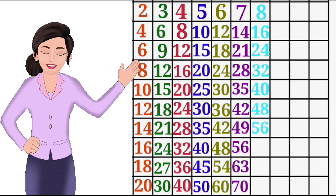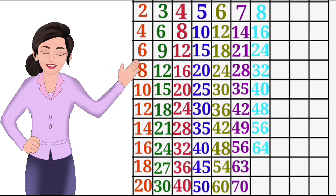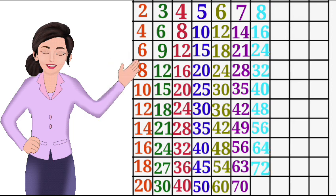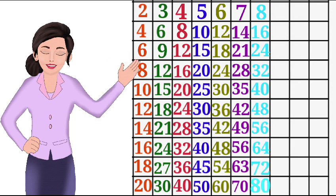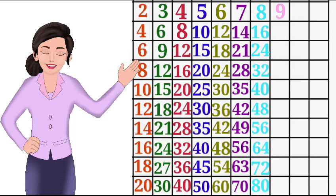8 7s are 56, 8 8s are 64, 8 9s are 72, 8 10s are 80. 9 1s are 9, 9 2s are 18.